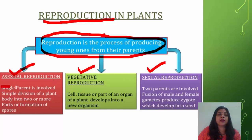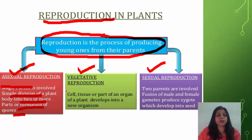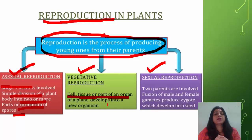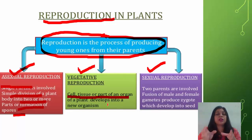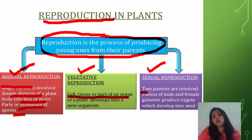In asexual reproduction, a single parent is involved — there is a simple division of a plant body into two or more parts, or the formation of spores. The new individual arises from a single parent. In vegetative reproduction, a cell, tissue, or part of an organ or plant develops into a new organism. In sexual reproduction, two parents are involved — the fusion of male and female gametes produces a zygote which develops into a seed.